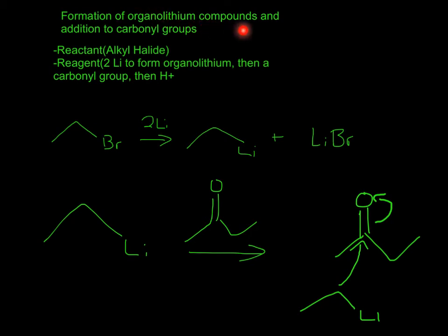We have the formation of organolithium compounds and addition to carbonyl groups. The reactant will be an alkyl halide with two carbons and a bromine, and you'll have two lithiums to form organolithium, then a carbonyl group, then hydrogen plus.